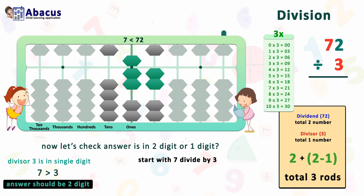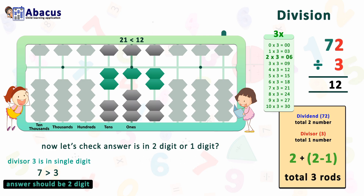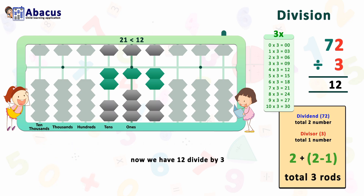Now start with 7 divided by 3. In the table of 3: 2×3=6 and 3×3=9. So we use 2×3=6. Set 2 on the tens rod by moving 2 beads. Now subtract 6 on the right side to keep track of remainders — this is the most important rule of division. 7 minus 6 equals 1, so we have remainder 12. Now the new dividend is 12.